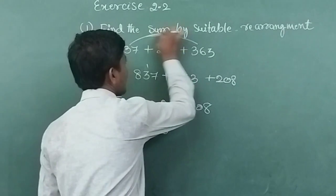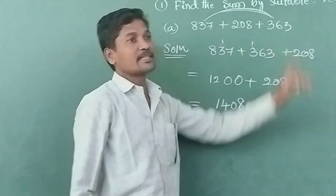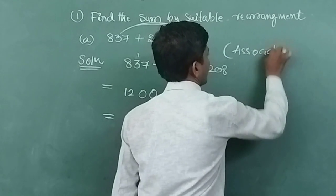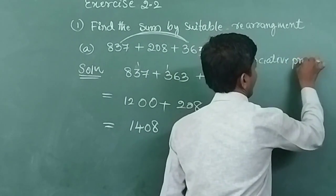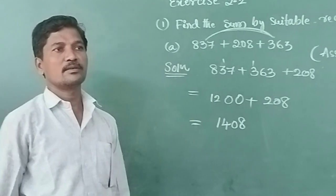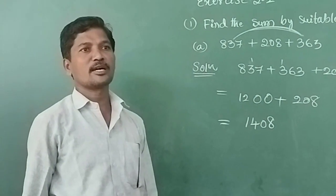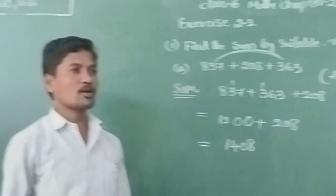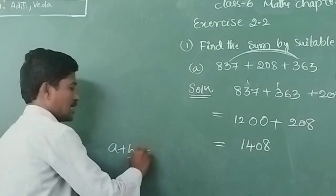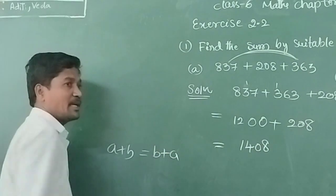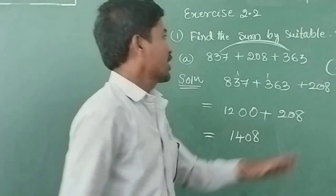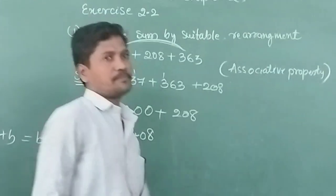Here we rearrange the number. That free arrangement is there now. That is called as associative property. If we are changing in only two numbers, it is commutative property, not closer property. A plus B - if we are changing this, first we are taking A and then we are taking B, this property is called as commutative property. Now which property we use? Associative property.